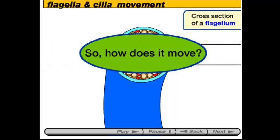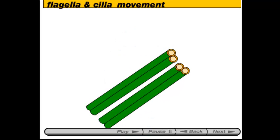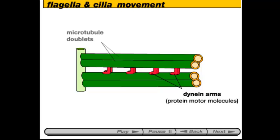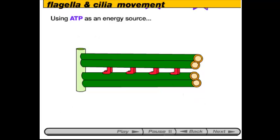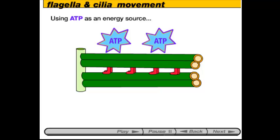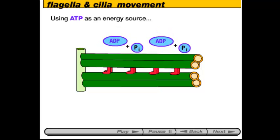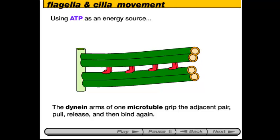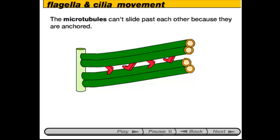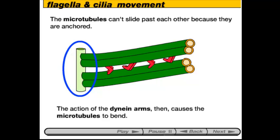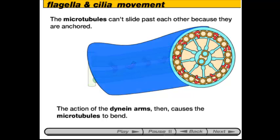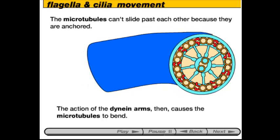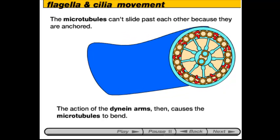So how does it move? Taking two of the sets of microtubules out of the structure, we can see they're anchored to a base with the dynein arms in between. Using ATP as the energy source, the dynein arms walk along the tubules — the dynein arms of one microtubule grip the adjacent pair, pull and release, then bind again as they walk along. Since the microtubule is anchored, they can't slide past each other; instead, this causes the microtubules to bend, leading to the whip-like and undulating motion we see in both flagella and cilia.